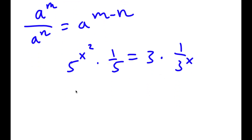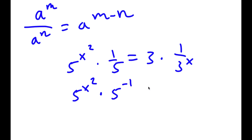Now 1 over 5 is the same thing as 5 to the power of negative 1. And 1 over 3 to the power of x is the same thing as 3 to the power of negative x.